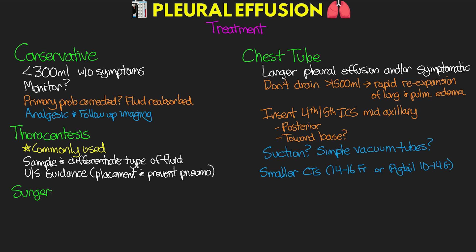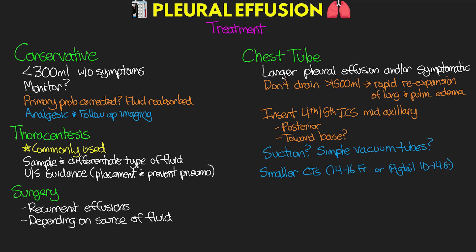Surgery is an option for recurrent pleural effusions or depending on the source of the fluid. This can often be performed with video-assisted thoracoscopy surgery (VATS) but can also be an open thoracotomy. Chemical or surgical pleurodesis may also be warranted for patients with recurrent effusions.